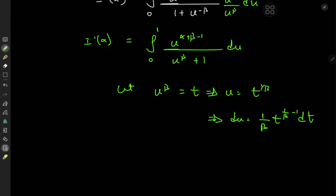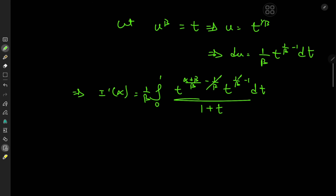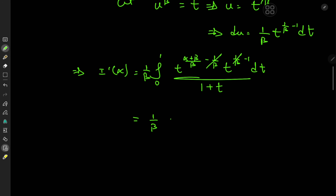This implies that I prime of alpha is the integral from 0 to 1. Since u itself is t to the 1 over beta, we have t to the alpha plus beta over beta minus 1 over beta, and because of the differential element we have a t to the 1 over beta minus 1 term, dt over 1 plus t, with a factor of 1 over beta outside. We see some lovely cancellation, giving us 1 over beta times the integral from 0 to 1 of t to the alpha plus beta over beta minus 1, over 1 plus t dt.